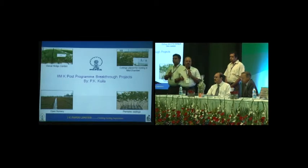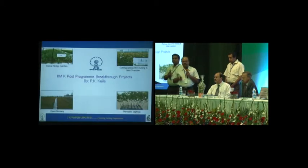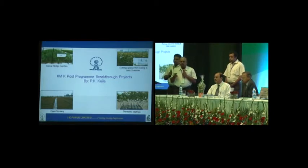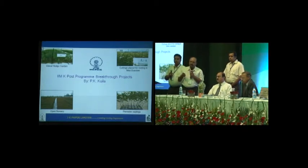Clonal plant production starts with planting of mother plants in a sand bed, which is called a clonal hedge garden, followed by collection of cuttings and planting in a mist chamber for rooting. After the cutting gets rooted, it is shifted to open nursery where the plants are reared till the farmer takes it for plantation.